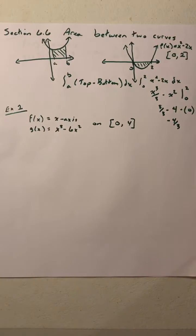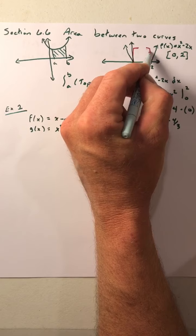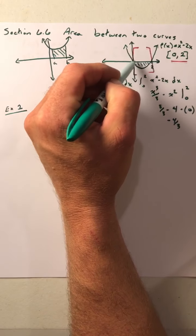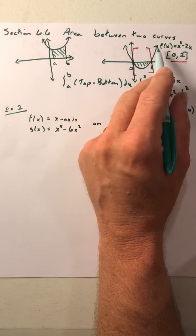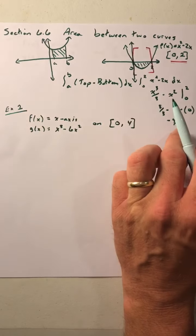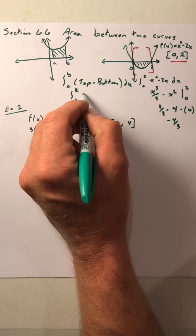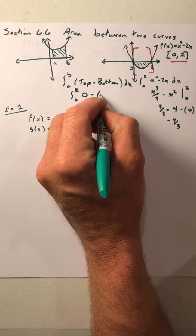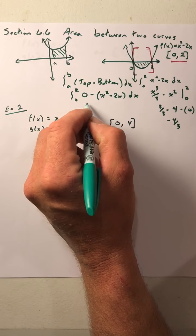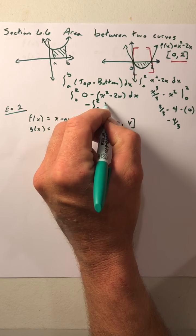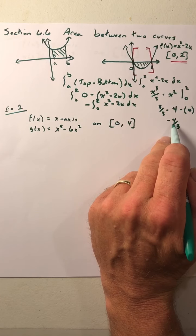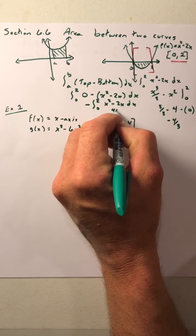If we look just from 0 to 2, because that's all our interval is, which function has higher y values? Well, the higher y values would be the x-axis, because they're always going to be 0. The bottom curve is going to be that f(x) function, or x² - 2x. So in order to get a positive area, we would integrate from 0 to 2 of our top curve, which is 0, minus that bottom curve, which is x² - 2x dx. That's essentially 0 minus anything, so we can pull that negative out. We have the negative integration from 0 to 2 of x² - 2x dx. We know that gives us negative 4/3, so the negative of negative 4/3 gives us a positive 4/3 area.